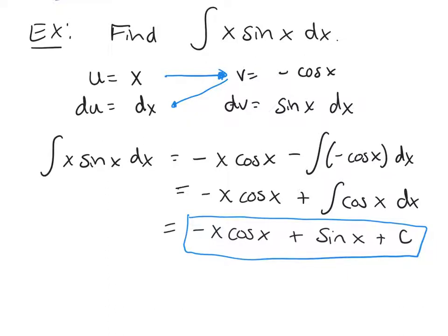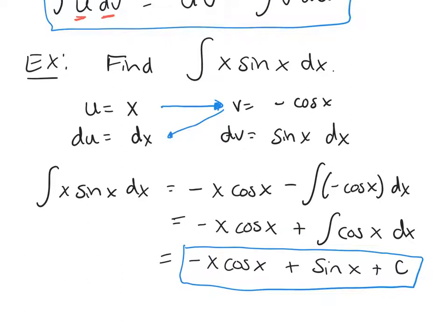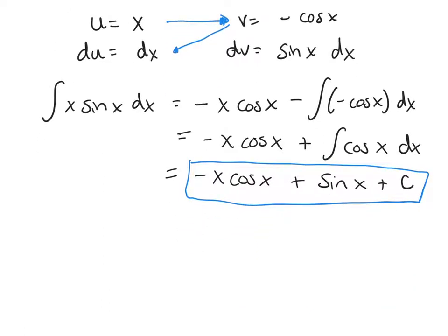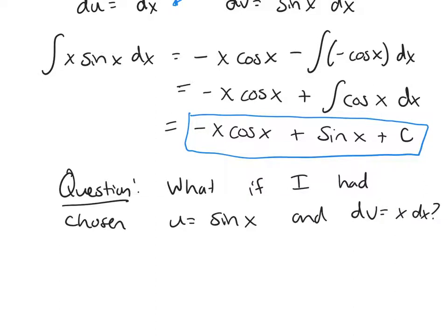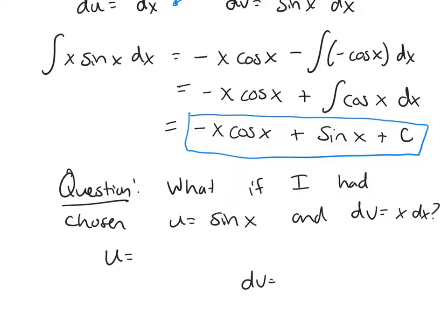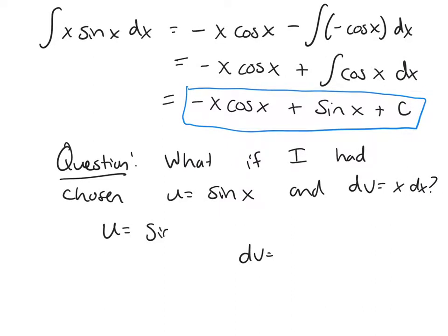One thing to ask is: how did I know x should go in the u spot and sine in the dv spot? What happens if we make the opposite choice — u equals sin(x) and dv equals x dx? Let's fill out the table to see.